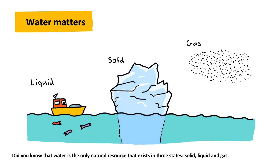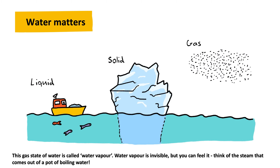Did you know that water is the only natural resource that exists in three states? Solid, liquid, and gas. This gas state of water is called water vapor. Water vapor is invisible, but you can feel it — think of the steam that comes out of a pot of boiling water.